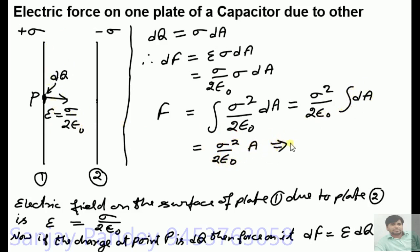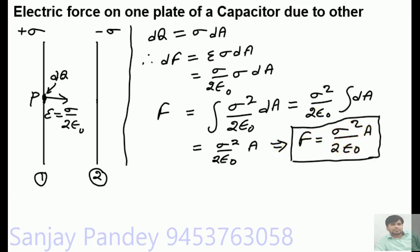So F = σ²A / (2ε₀). Since the direction of this force is along the electric field vector E, that is towards plate 2, we can say that plate 2 is attracting plate 1 by this force. Similarly, plate 1 is also attracting plate 2 by this force.